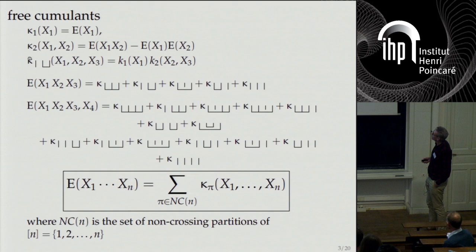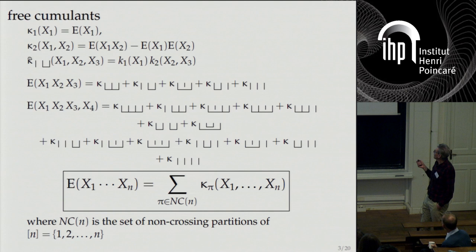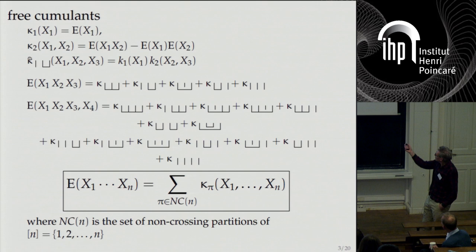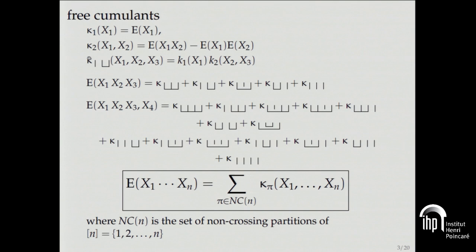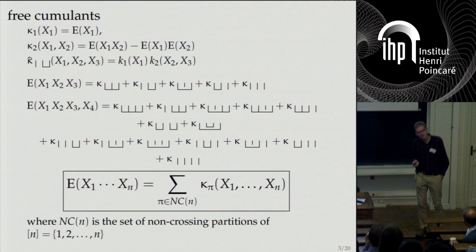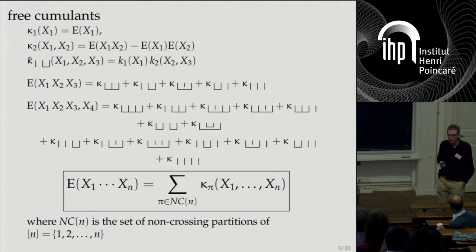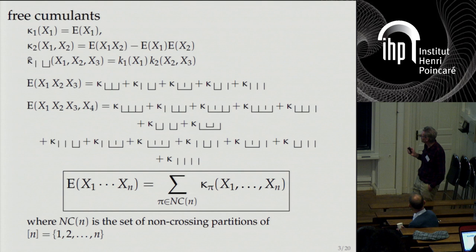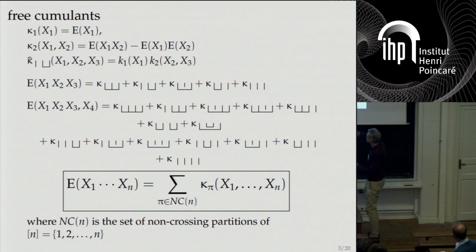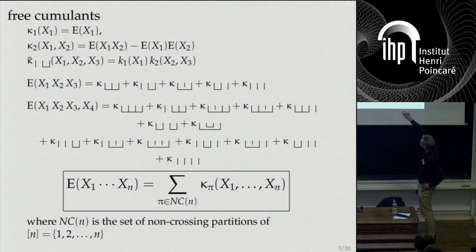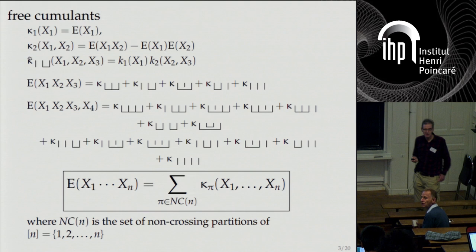Here is the version of free cumulants—Roland's work from about 25 years ago. In free probability, the coefficients of the R-transform that Voiculescu came up with have a very similar expansion, except instead of doing all partitions you do non-crossing partitions. In the case of four elements there are 15 partitions and one has a crossing, so 14 are non-crossing. For free probability, this is the fundamental rule: you write the expectation of a product as a sum of free cumulants. I'll use kappa for the free cumulants and k for the tensor cumulants.